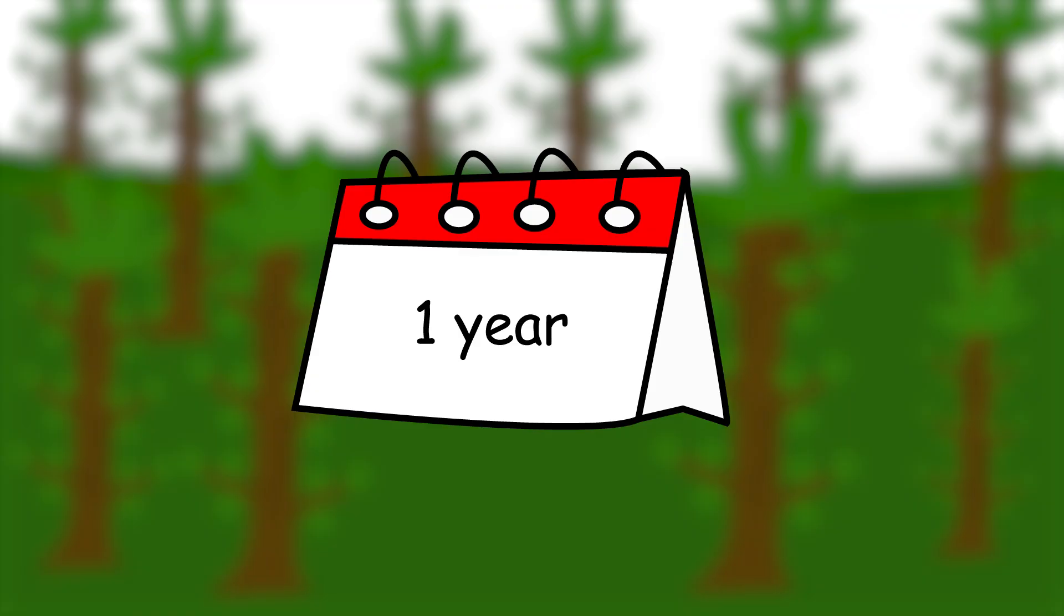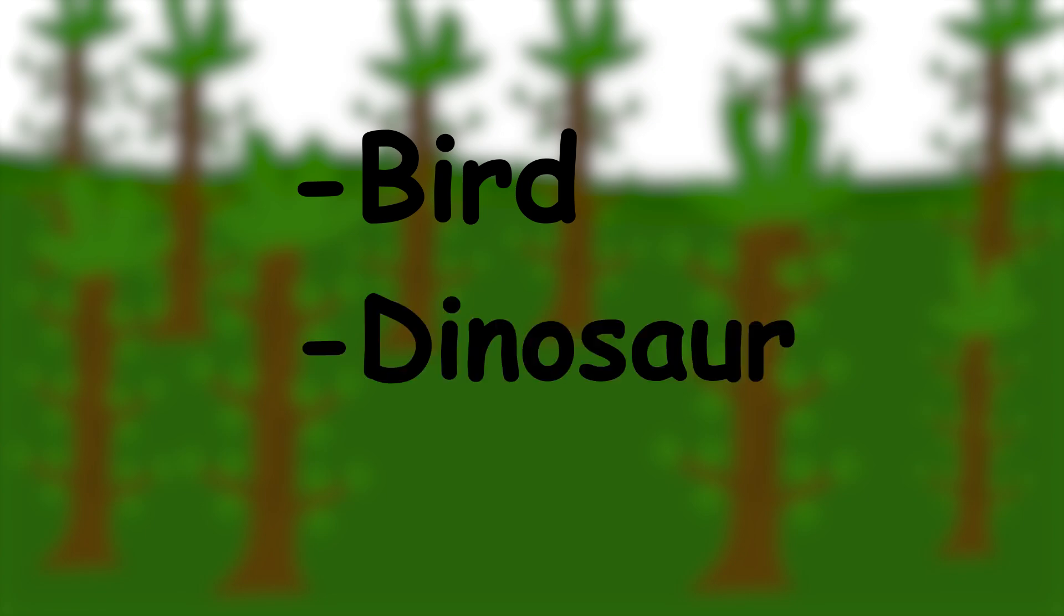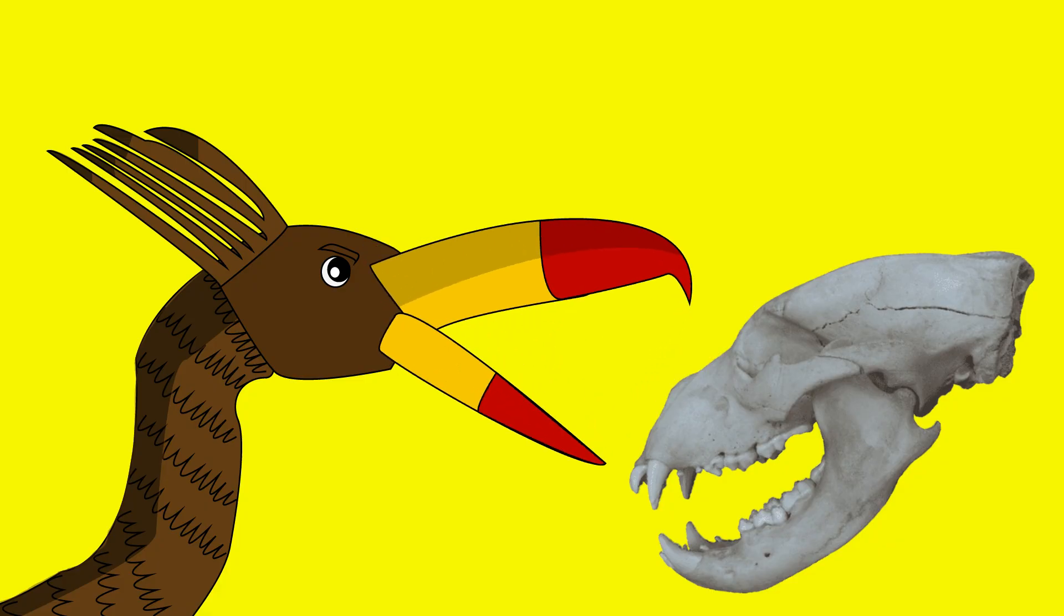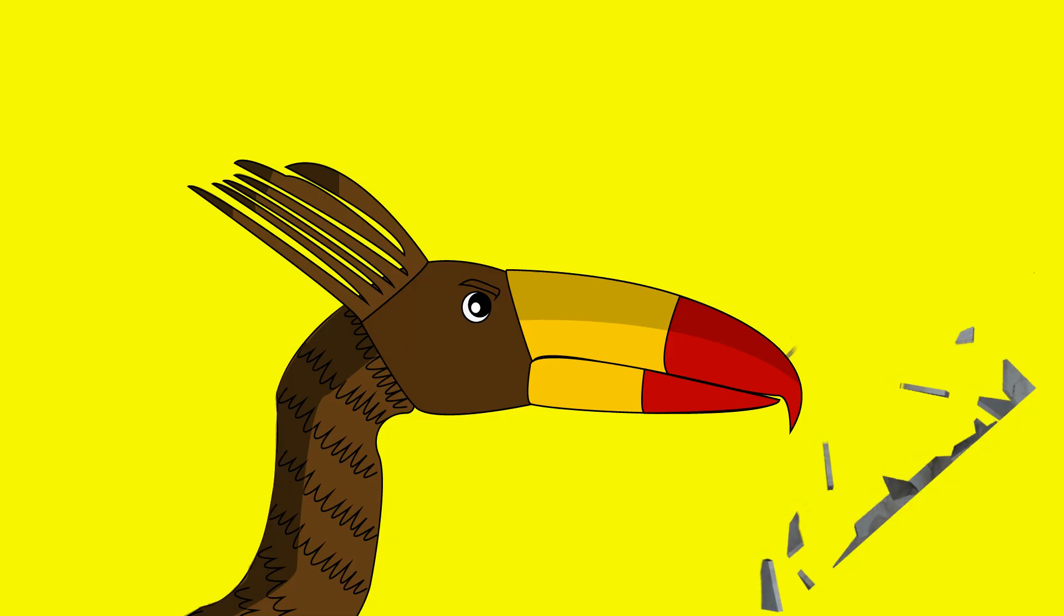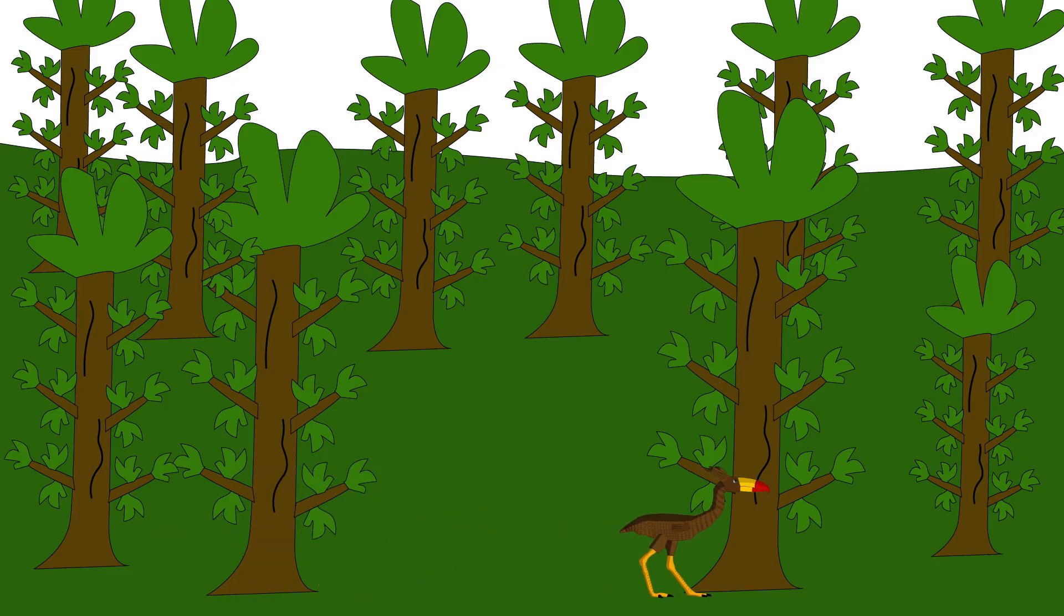By your first year, you're a walking contradiction. Part bird, part dinosaur, part rage. Your beak could crush a skull in one blow. Your legs are built for sprinting short distances. You can't fly. No wings. But you don't need to. You dominate the forest floor.